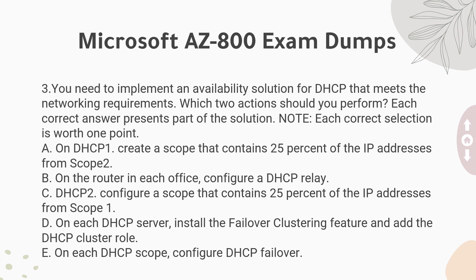Question 3: You need to implement an availability solution for DHCP that meets the networking requirements. Which two actions should you perform? Each correct answer presents part of the solution. Note: each correct selection is worth 1 point. A. On DHCP1, create a scope that contains 25% of the IP addresses from scope 2. B. On the router in each office, configure a DHCP relay. C. On DHCP2, configure a scope that contains 25% of the IP addresses from scope 1. D. On each DHCP server, install the failover clustering feature and add the DHCP cluster role. E. On each DHCP scope, configure DHCP failover.